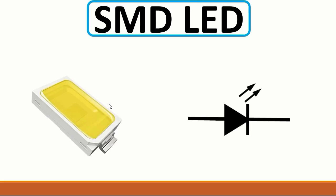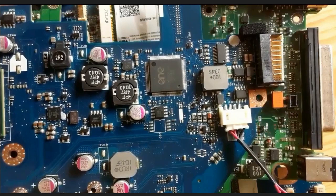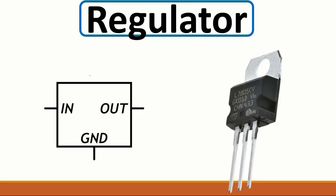Here we have an SMD LED — a light emitting diode. It emits light, with two arrows. The symbol is the same as a normal diode plus two arrows meaning emitting light. Let's see if we can find any LED on the motherboard — we don't have any LED here.